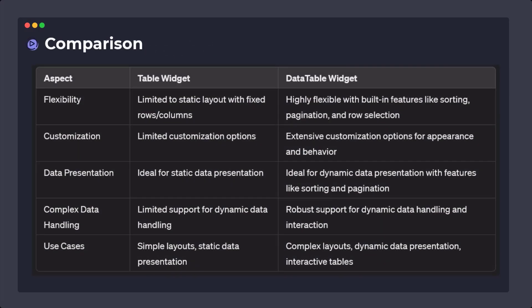This is a generic comparison between the two — there are a lot of other differences, but at a high level: for flexibility, Table has limited flexibility while DataTable has higher flexibility. In simple terms, Table is for static data and DataTable is for dynamic data. For customization, Table has limited options while DataTable has many more. Data presentation in Table is static; in DataTable it's dynamic — we can do sorting, change rows at runtime, and call setState to change the shape of the DataTable without refreshing the screen.